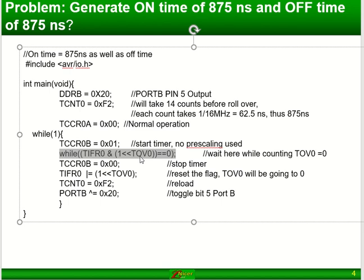Only when it rolls over will TOV become a 1. Before that it will be 0, and this statement is testing that value of TOV0. TOV is actually defined in the IO header file as bit number 0 in this specific register. If you do the testing as I'm doing it here, as long as TOV is 0, it will result in 0, which means I will sit here waiting.